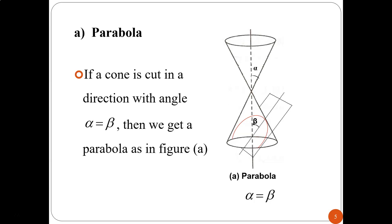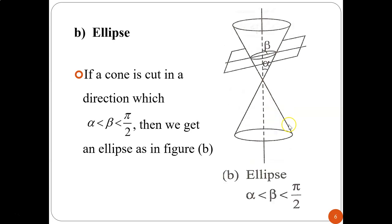Now let's go to parabola in more detail. This is how a parabola looks — the red line shown here — it's U-shaped. If a cone is cut in a direction where angle alpha equals beta, you cut it slightly tilted (condong), and you will get a parabola. For an ellipse, if the cone is cut where beta is greater than alpha and less than pi over 2, you get an ellipse as shown in the figure.